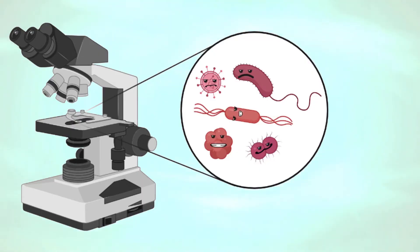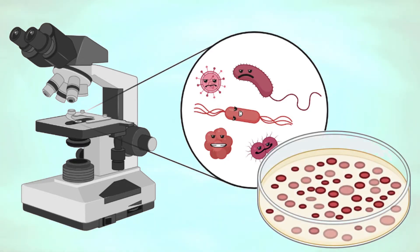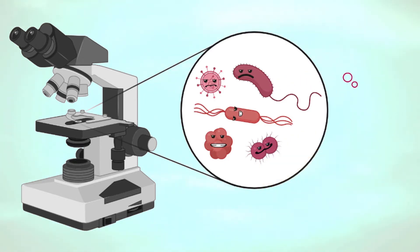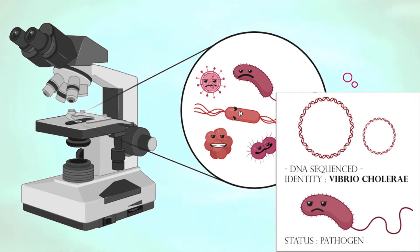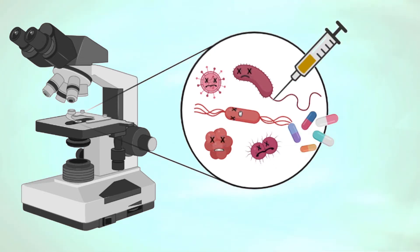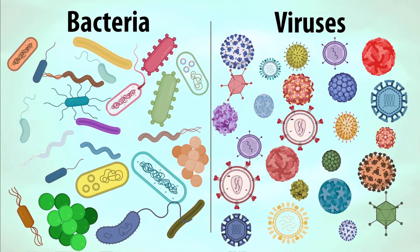Scientists can use high power microscopes to see what germs look like, we can grow them in labs, and now using genetic testing scientists can precisely identify different germs and test out new medicines to help us fight them. There are other infectious organisms like fungi or protozoans, but the majority of the infections Canadian health scientists are worried about are caused by bacteria or viruses, so we're going to look a bit more closely at those today.